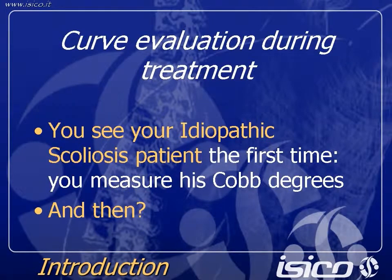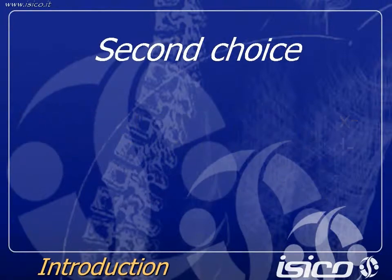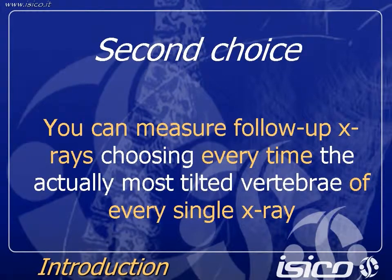When you see your idiopathic scoliosis patient for the first time, you measure Cobb degrees. Then you can decide what to do. You can decide to measure follow-up X-rays choosing the same vertebrae you chose in the start-of-treatment X-ray. Otherwise, you can choose to measure follow-up X-rays choosing every time the actually most tilted vertebrae of every single X-ray.